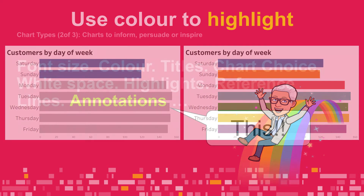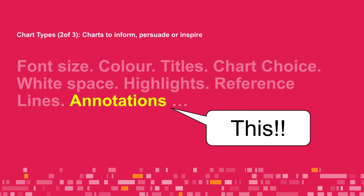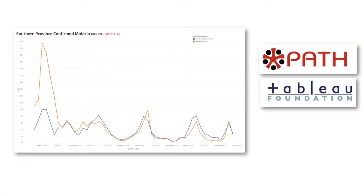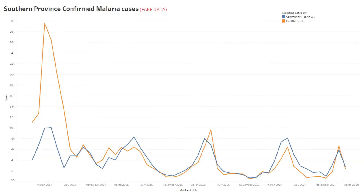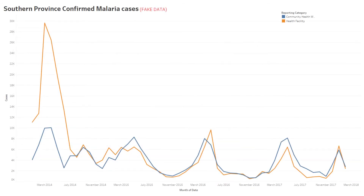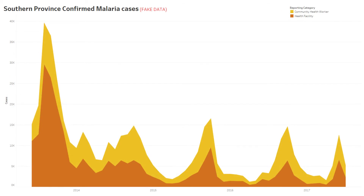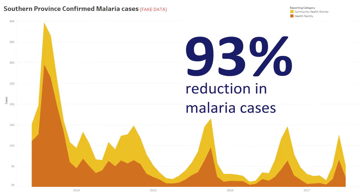You can also use annotations to punch home the key message of a slide. Here's a chart given to us by PATH to use in the 2017 Tableau customer keynote. PATH used data and Tableau to try to eradicate malaria in Africa — this is data showing a 93% reduction of cases in Zambia. The chart is okay, but to really land the message, just put the headline right on there. The title tells the audience what they need to see, and the chart gives them the secondary evidence.